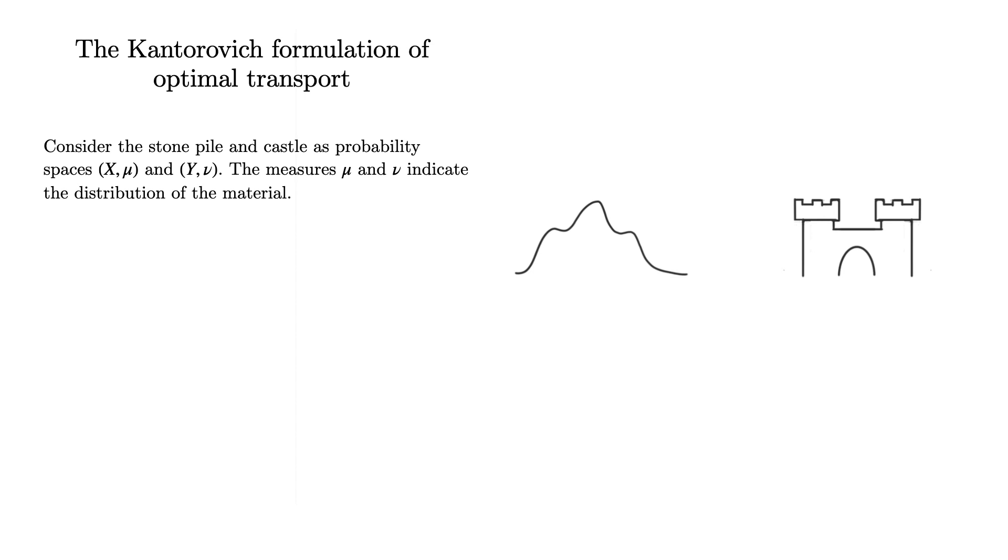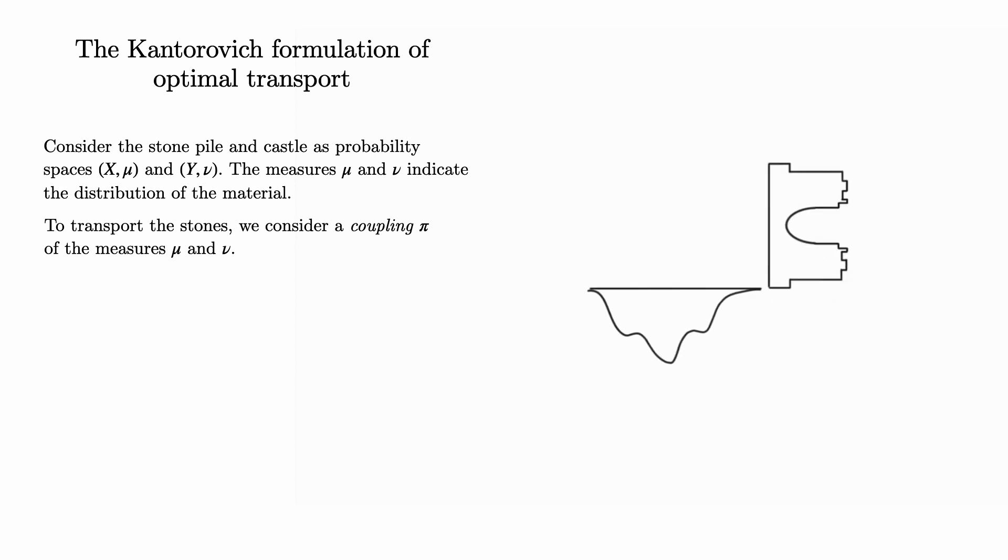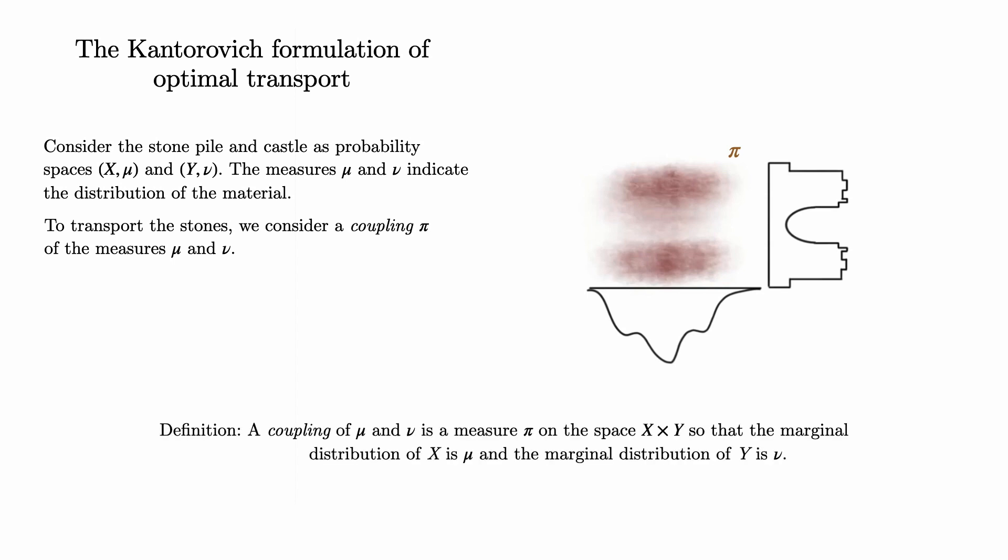To formalize this problem, we use the Kantorovich formulation of optimal transport. For this, we consider the stone pile and castle as probability spaces X, μ and Y, ν. Here, the probability measures describe the shape of the distributions. To encode a transport, we consider a coupling of the measures μ and ν, which we denote by π. I should tell you what a coupling is. A coupling of two probability measures is a measure on the product space so that the marginal distributions are μ and ν, respectively.